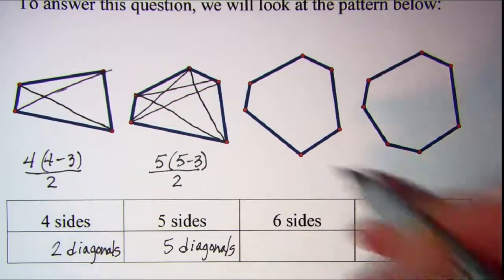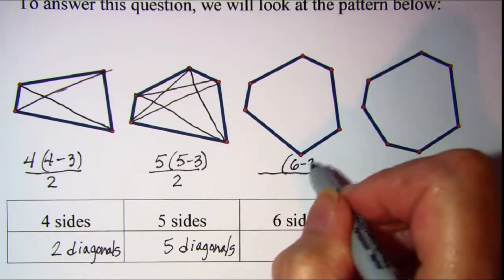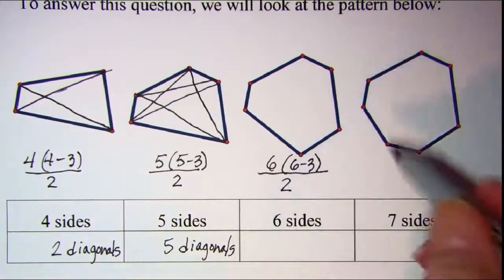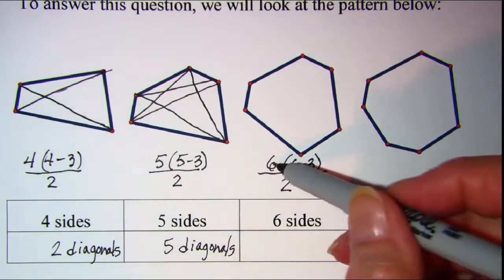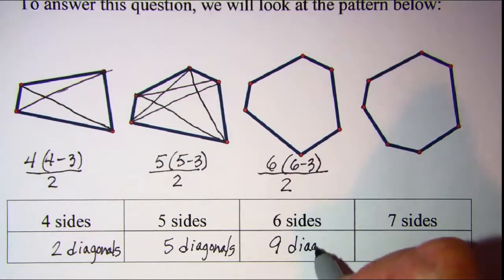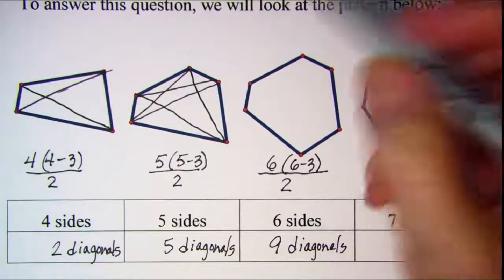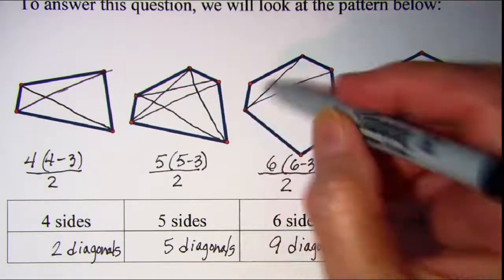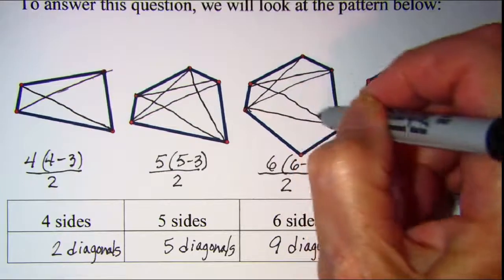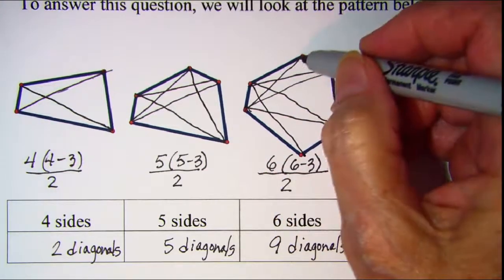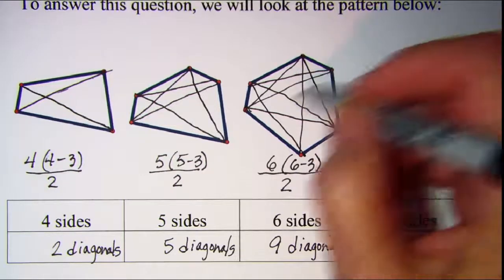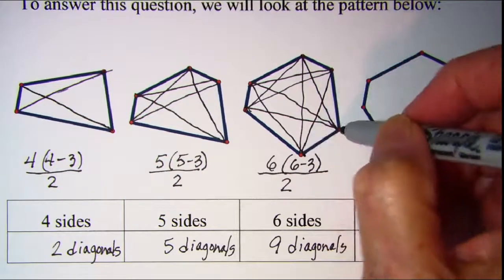For six sides, we compute six minus three times the number of vertices, which is six, then divide by two. Six times three is 18, divided by two gives us nine diagonals. Let's verify by counting: one, two, three, four, five, six, seven, eight, nine — and the rest are all duplicates. That confirms nine diagonals for a hexagon.